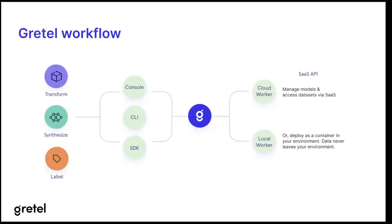The Gretel workflow is illustrated here. We have our transform, synthesize, and labeling — we call this the control plane. In the middle, where you see our Gretel logo, we have the controls for Gretel cloud that orchestrates the requests through the console, the command line interface, or the SDK. On the right are the various ways you can run: either cloud workers or local workers. The local worker will only need to connect to Gretel cloud to transmit timing, logging, and error telemetry. The data does not leave your environment when running synthetics locally.